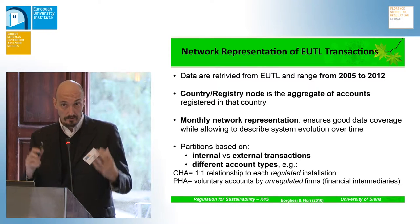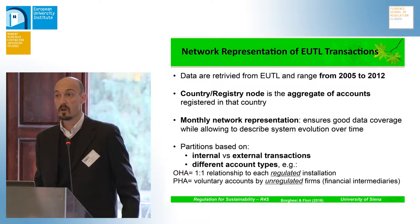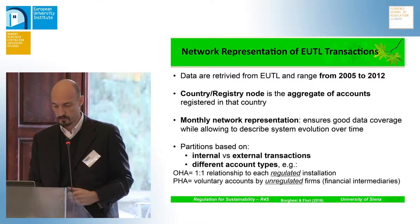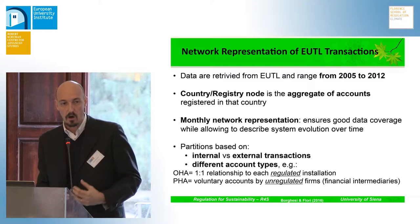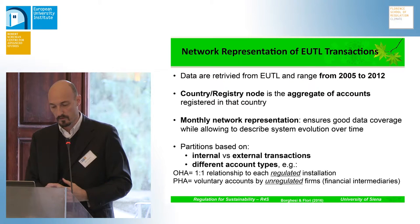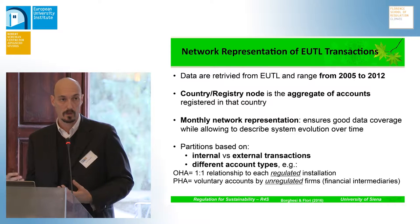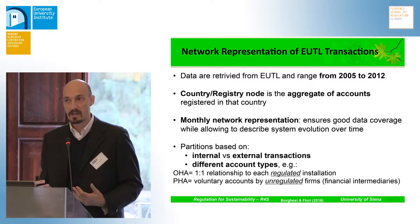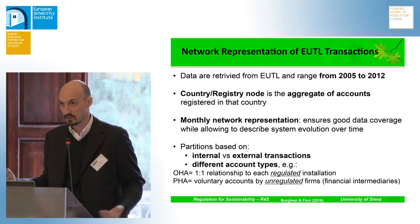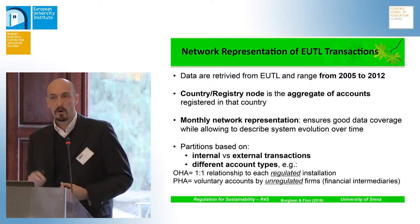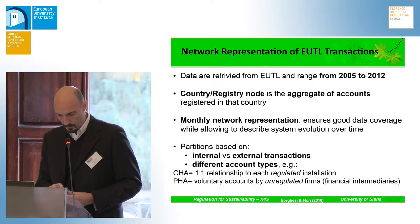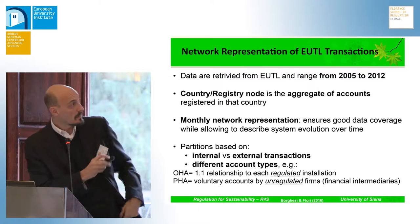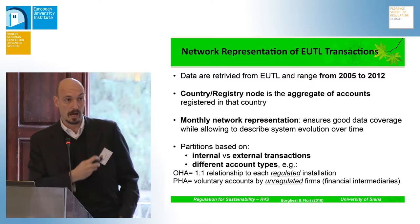We look at the first two phases, so our data come from the European Transaction Log and cover the period 2005–2012. Each node is the aggregate of accounts registered in one country. We aggregate the data on a monthly basis, because this ensures good data coverage while allowing us to describe the evolution of the system over time. We could have gone for a more granular description with data on a weekly or daily basis, but we would probably have lost the capacity to detect any trend. We perform two kinds of partitions: we distinguish transactions between internal and external — so within countries and across countries — and then we distinguish them according to the different account types being involved.